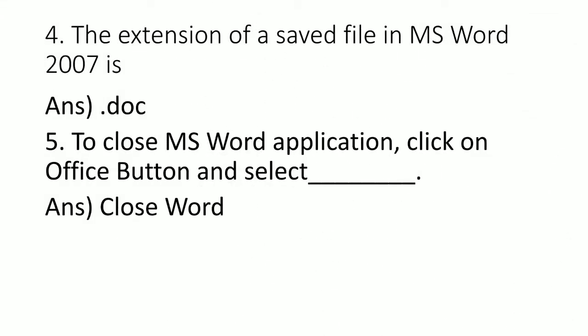Fourth one: The extension of a saved file in MS Word 2007 is — what is the extension? Three options are given: .doc, .dos1, .docx. So the answer is: .doc.